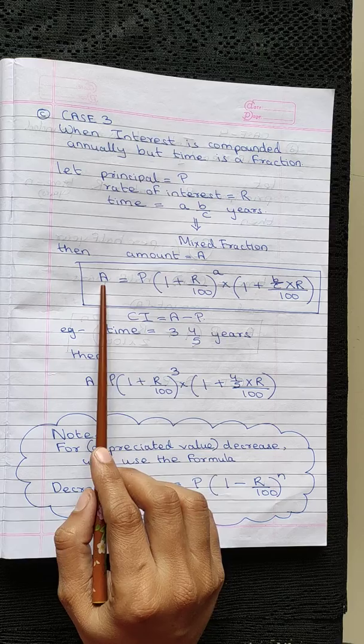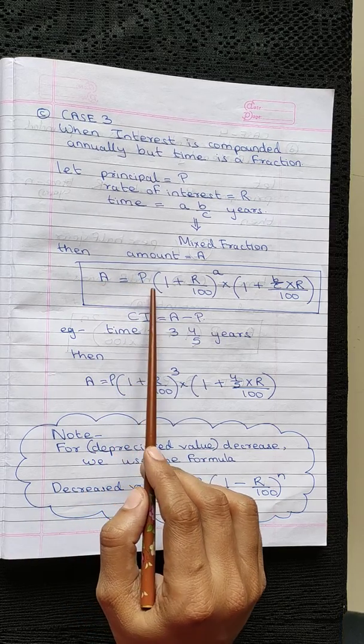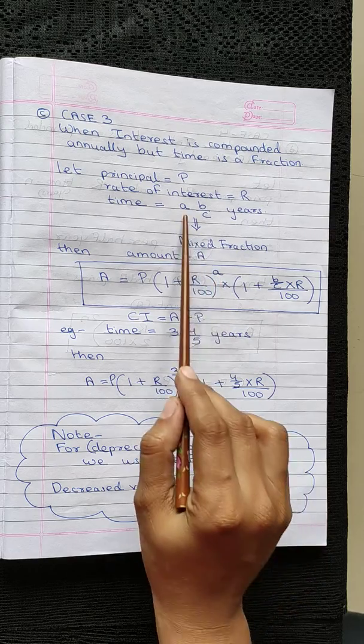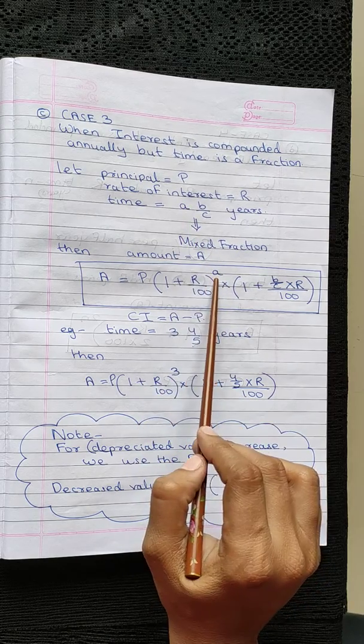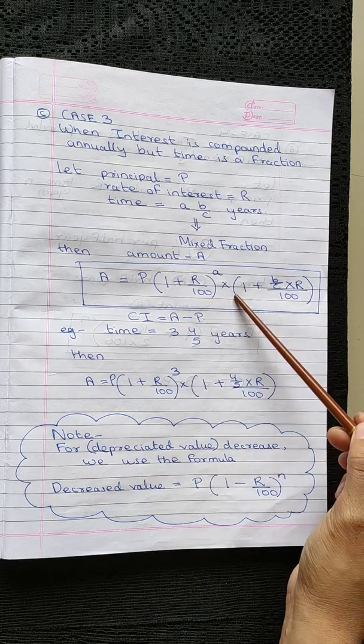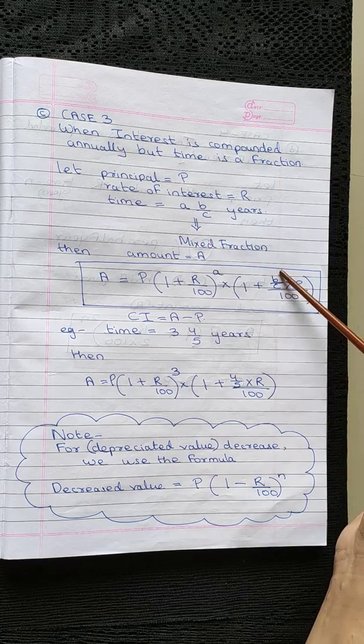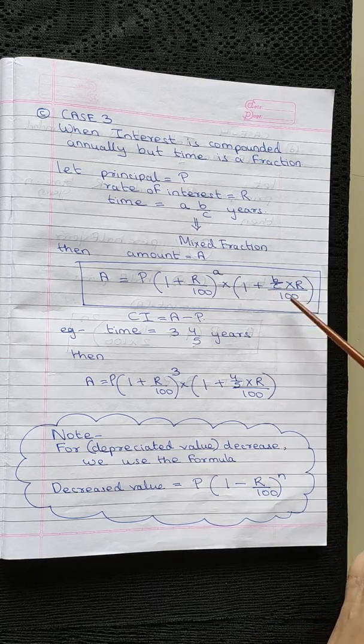So the formula becomes: amount is equal to P into 1 plus R upon 100, raised to the power of the whole number of the time period, into 1 plus the fractional part of the time period into R upon 100.